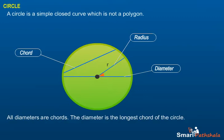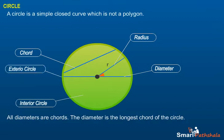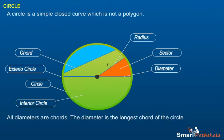An arc is a portion of circle. A circle has three parts: the interior, exterior and on the circle. A region in the interior of a circle enclosed by an arc on one side and a pair of radii on the other two sides is called a sector. A region in the interior of a circle enclosed by a chord and an arc is called a segment of the circle.